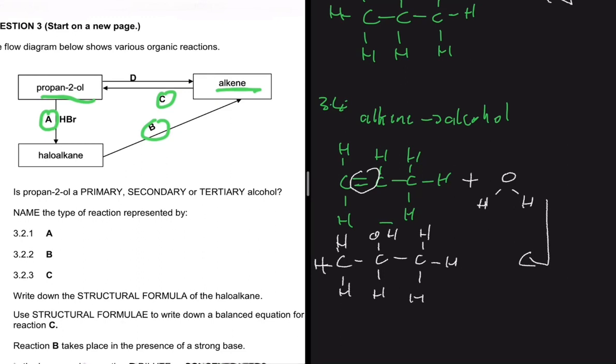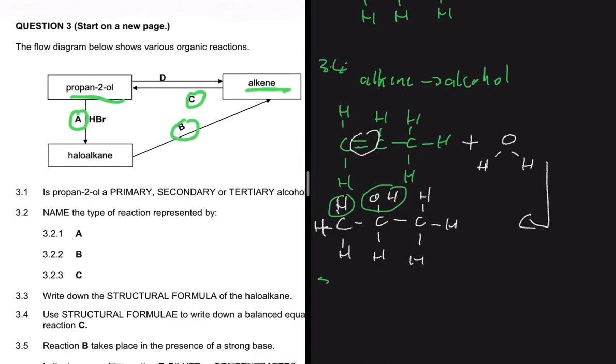The double bond got broken. OH on the second carbon and hydrogen on the first. And as a result, we have propane-2-ol. Let's move to the next question.